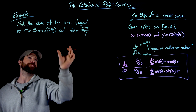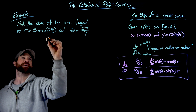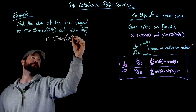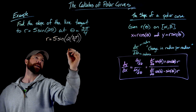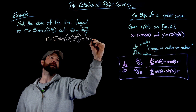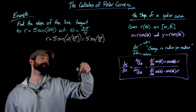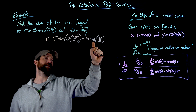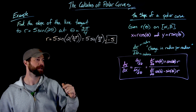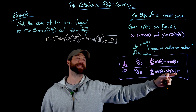First, to find r at this theta value, I plug θ = 3π/4 into r = 5sin(2θ). I get 5 times sine of 2 × (3π/4), which simplifies to sine of 3π/2. Three pi over two is 270 degrees; the sine of that is negative one. So this gives me r = negative five. My r value in this formula is going to be negative five.